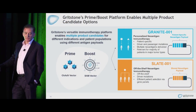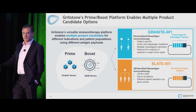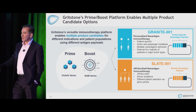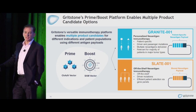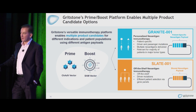We have two platforms. One is a patient-specific neoantigen program where we take each patient's tumor, sequence it, identify candidate neoantigens, and put them into the therapeutic product. The other is an off-the-shelf product called the Slate program, where we use shared neoantigens — the notion that certain patients will have common driver mutations and a relevant HLA known to be able to present those driver mutations. With that, thank you very much.